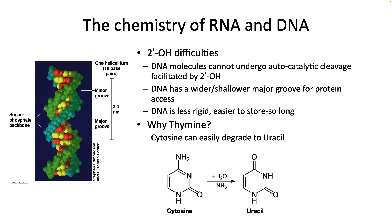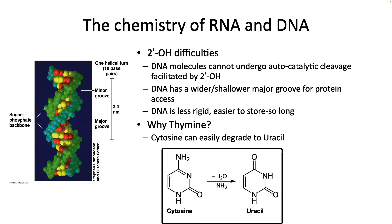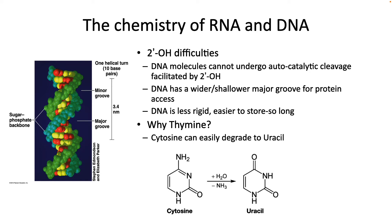So what about thymine? Why use it in DNA? All bases can undergo unwanted chemical reactions at some rate. One degradation that cytosine undergoes changes it into a uracil. If that happens, it changes the DNA code — a possible mutation. So how does thymine fix this problem? It's a substitute for uracil, not cytosine. If your DNA molecule encodes thymine to pair with adenine, then when there is a decay event of cytosine to uracil, the repair machinery will know that the uracil is not supposed to be there, and will repair it, converting it back to cytosine.